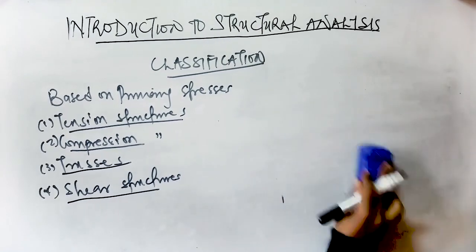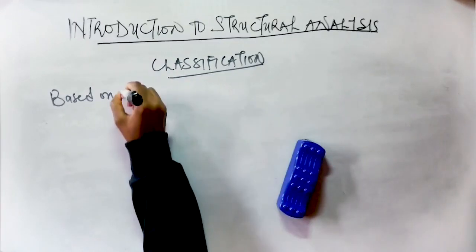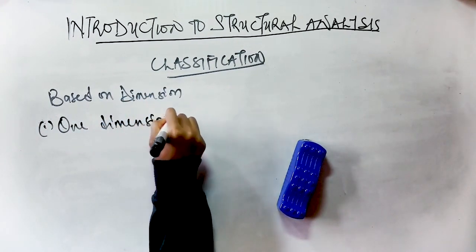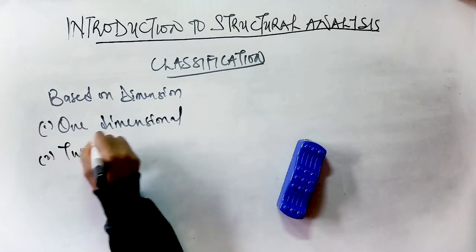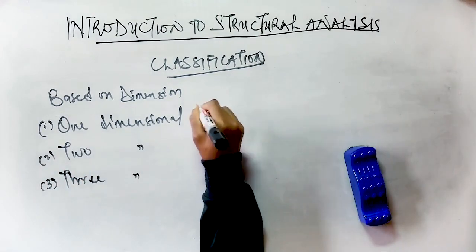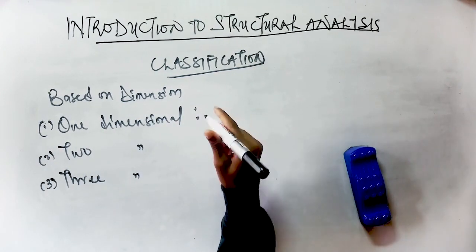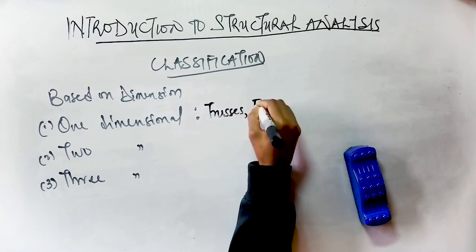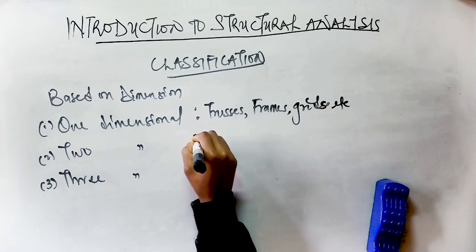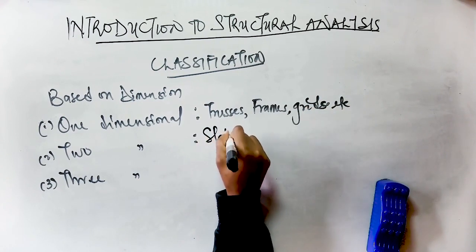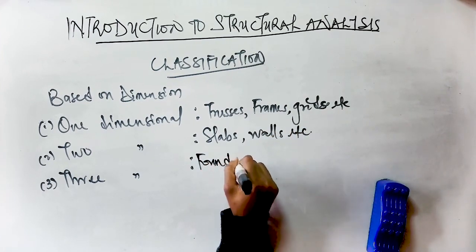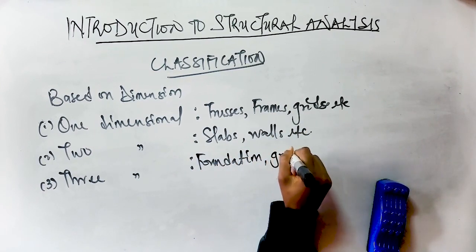The second classification of structures is based on dimension, divided into three categories. One-dimensional structures, also known as skeletal structures, include trusses, frames, grids, and cable structures. Two-dimensional structures, also known as surface structures, include slabs, shells, and walls. Three-dimensional structures, known as solid structures, include foundations, retaining walls, and gravity dams.